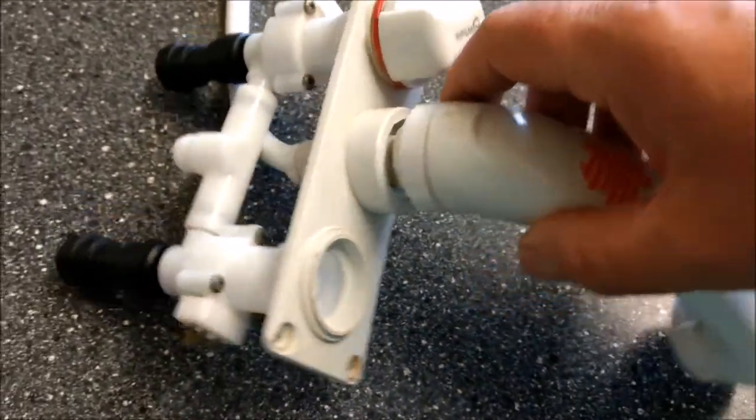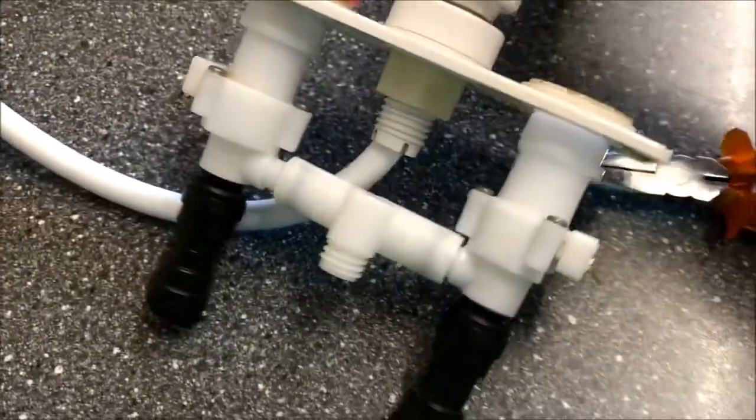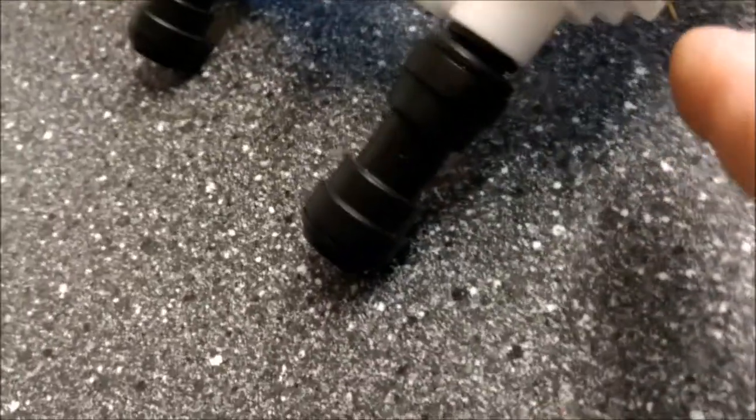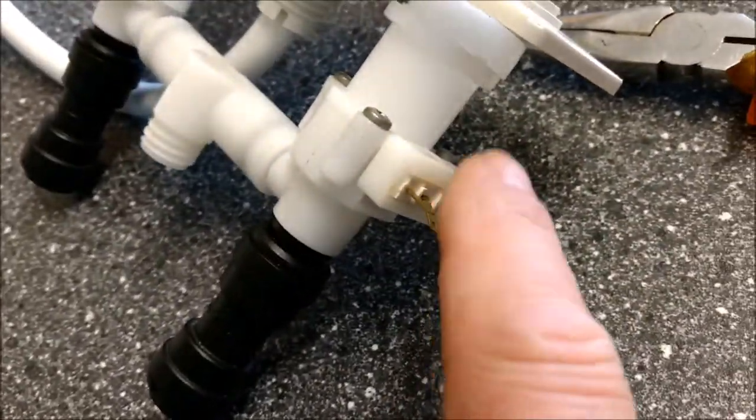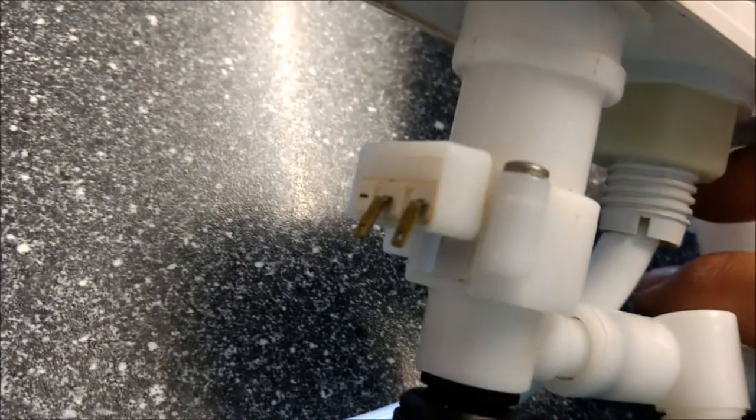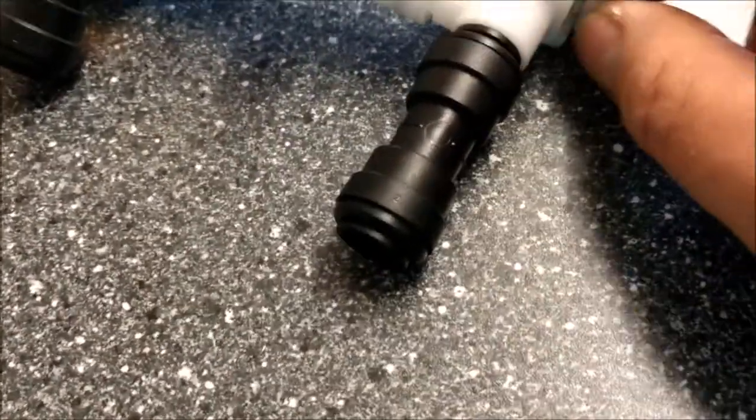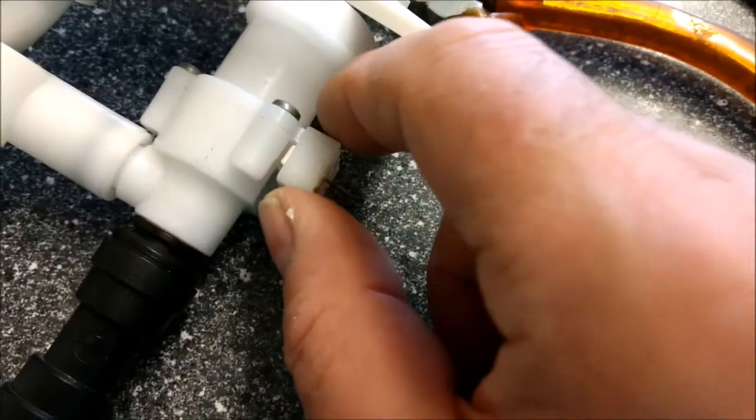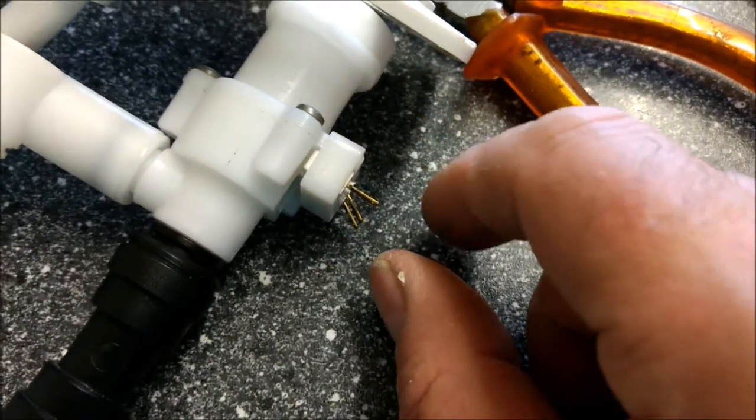However, while the tap is out, one little trick you can do while you're here is check the condition and operation of these microswitches. If ever you find you turn your tap on and it won't pump, these two microswitches just clip out quite simply by pulling that plastic sleeve there off and pull them out.